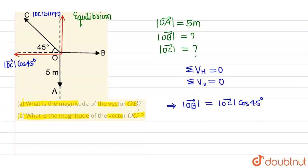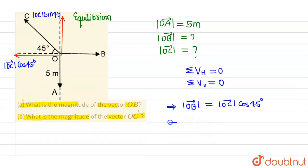Similarly, if I apply this in vertical direction, I can say that magnitude of OA vector must be equals to magnitude of OC vector into sin of 45 degrees.